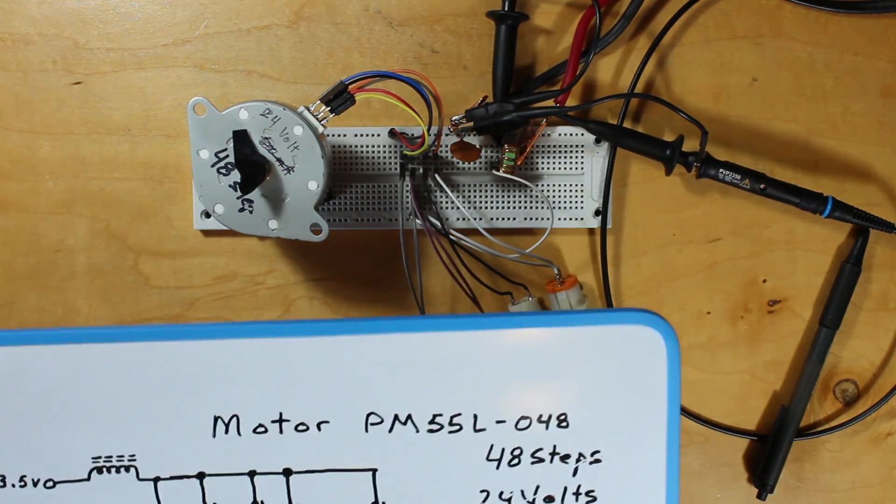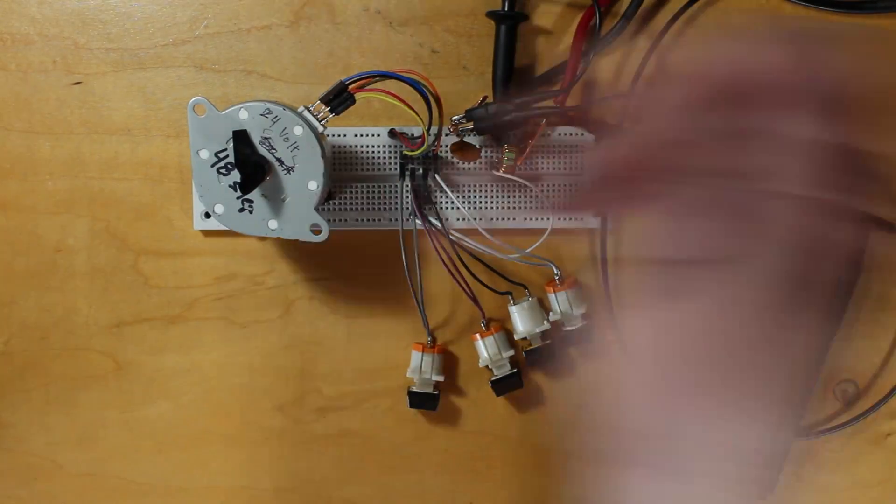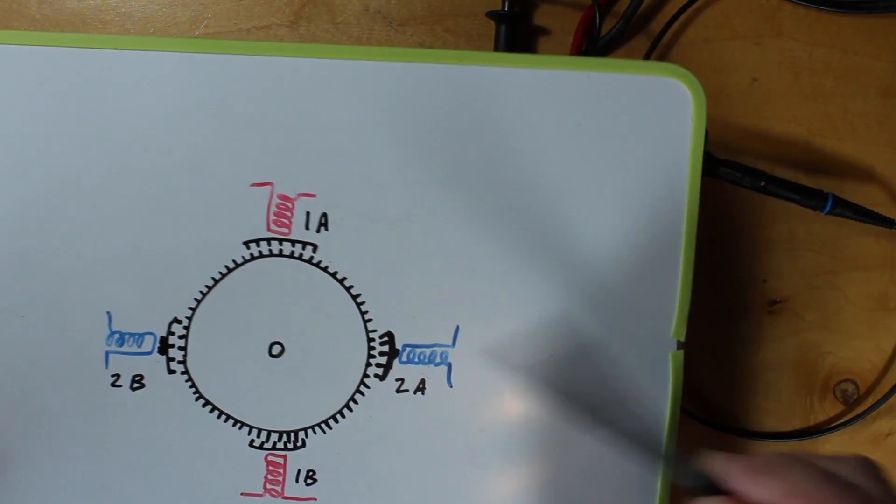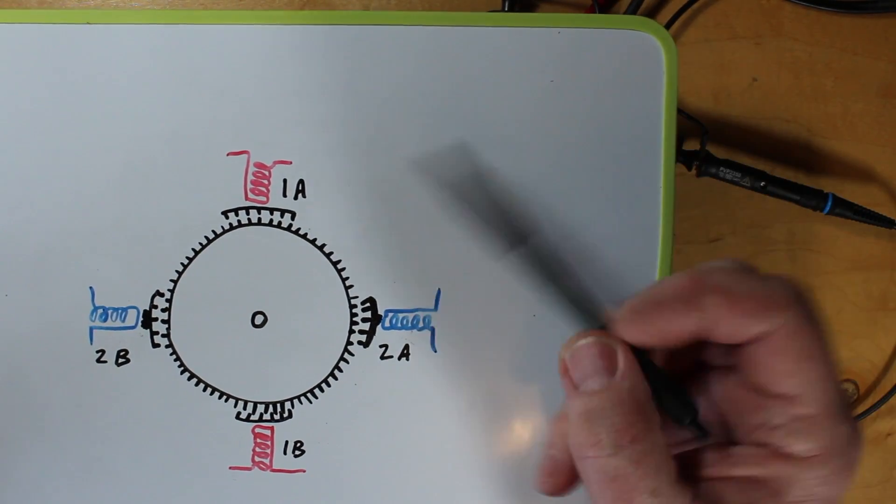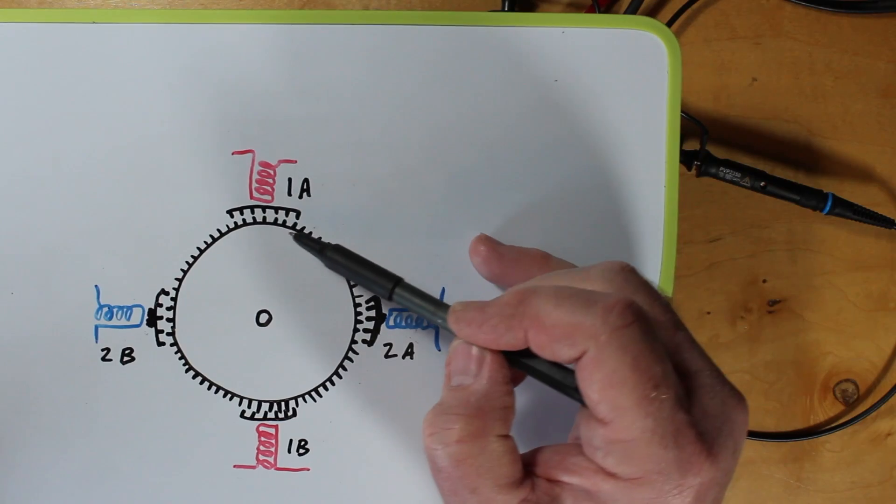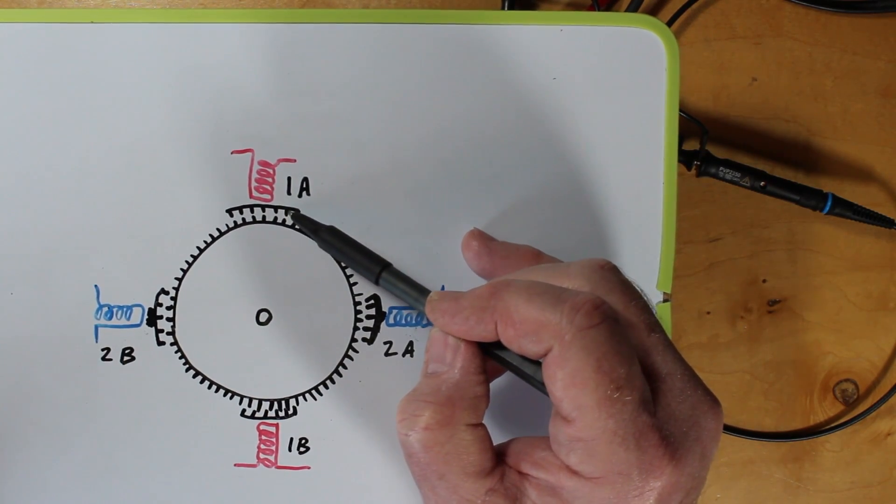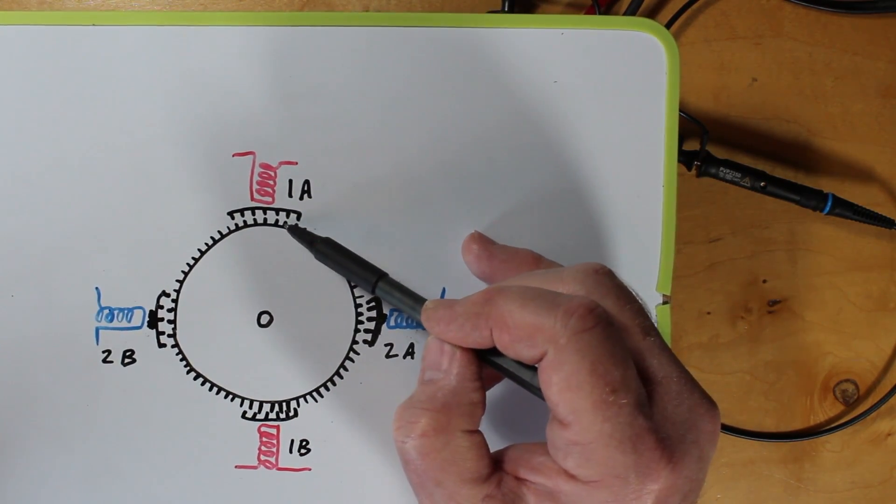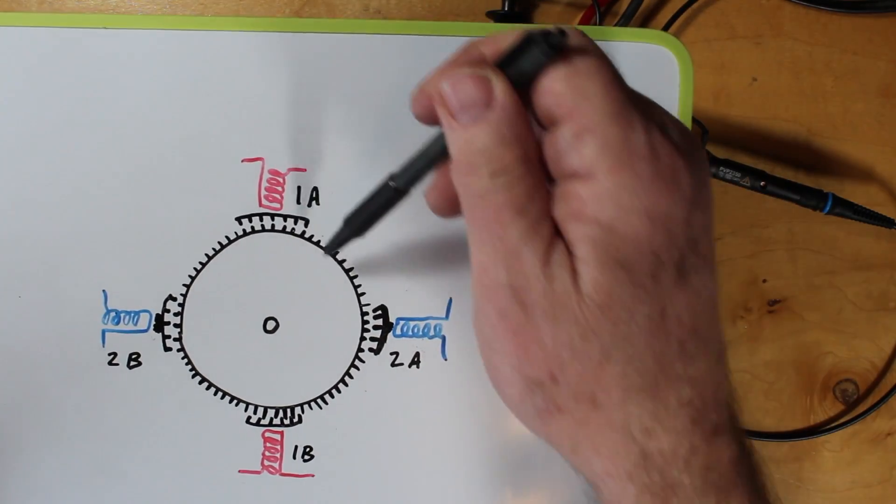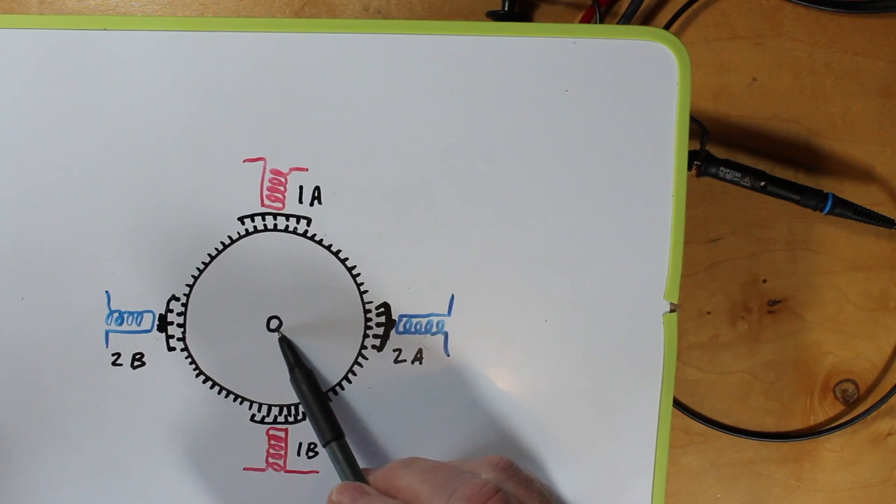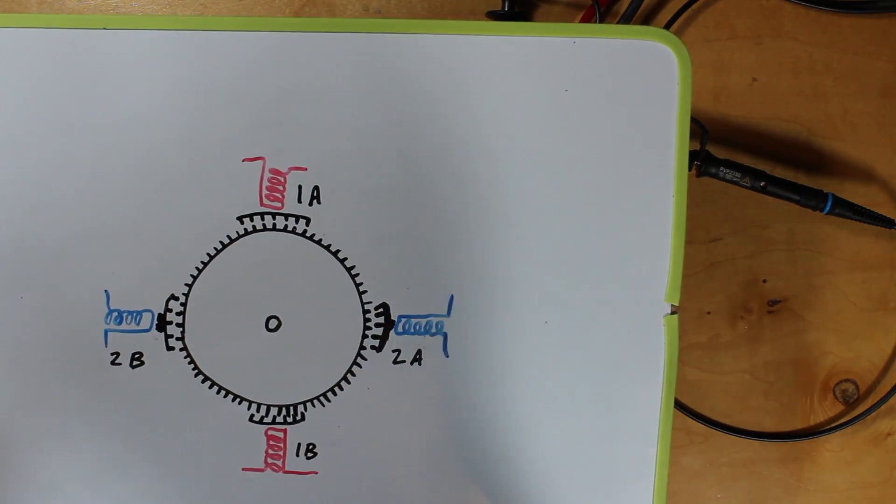I will show you on another little drawing here of what's happening with this motor. This is a representative drawing. We're energizing 1A and you can see this is obviously a very crude drawing. On 1A we get the teeth that line up in here magnetically. These are very close together and these teeth line up with the rotor teeth. Here's the shaft coming out. We're looking down on the motor.